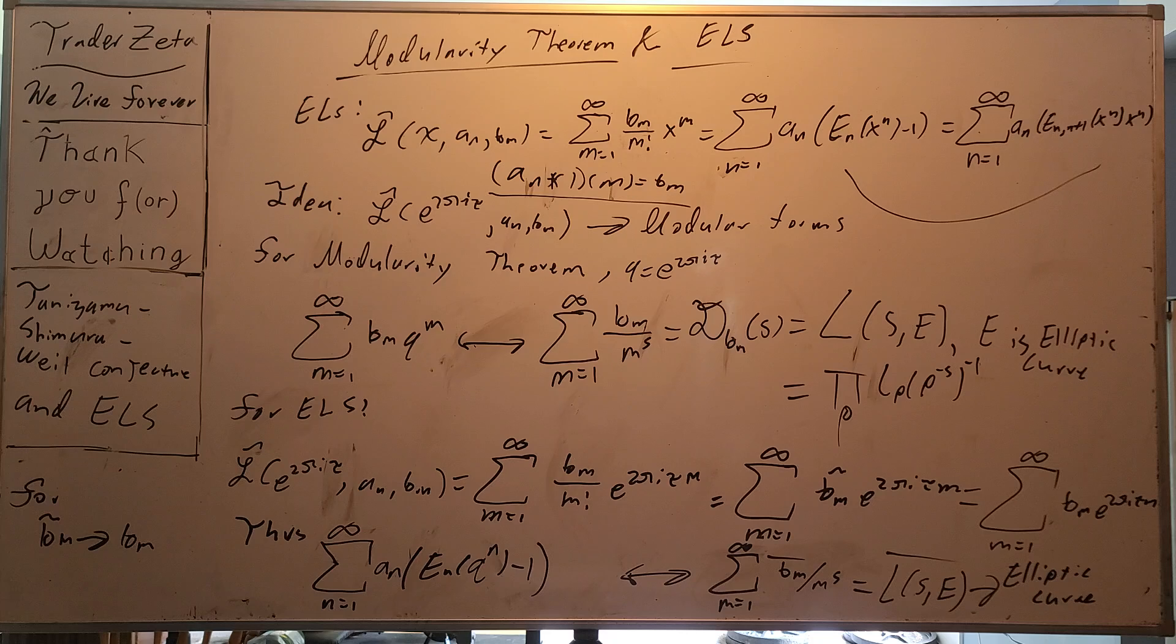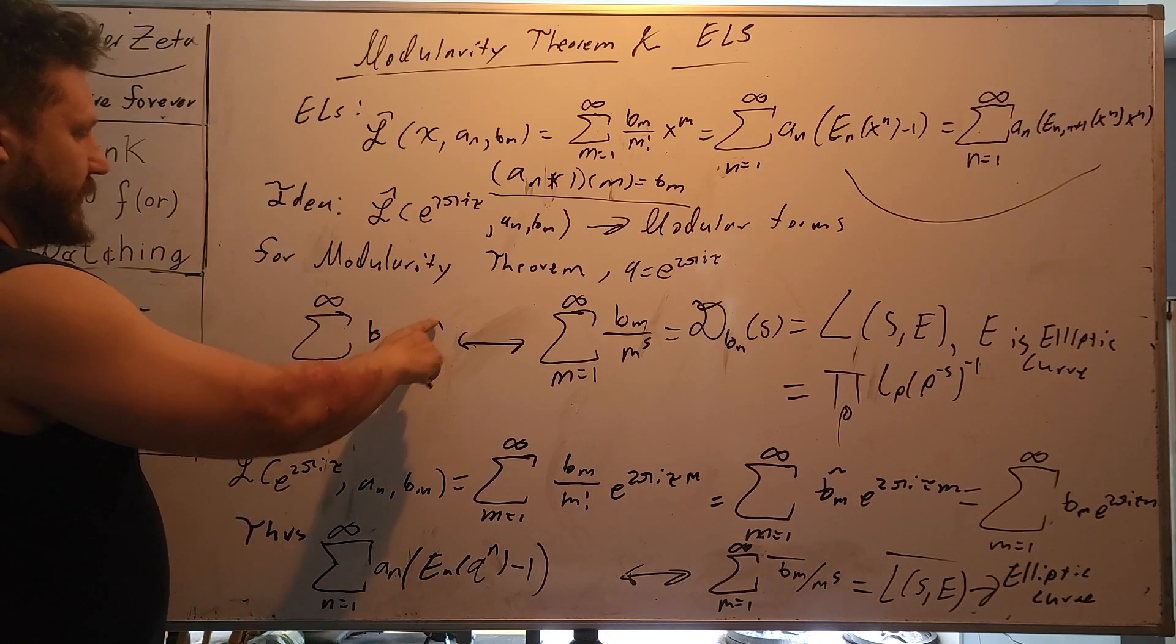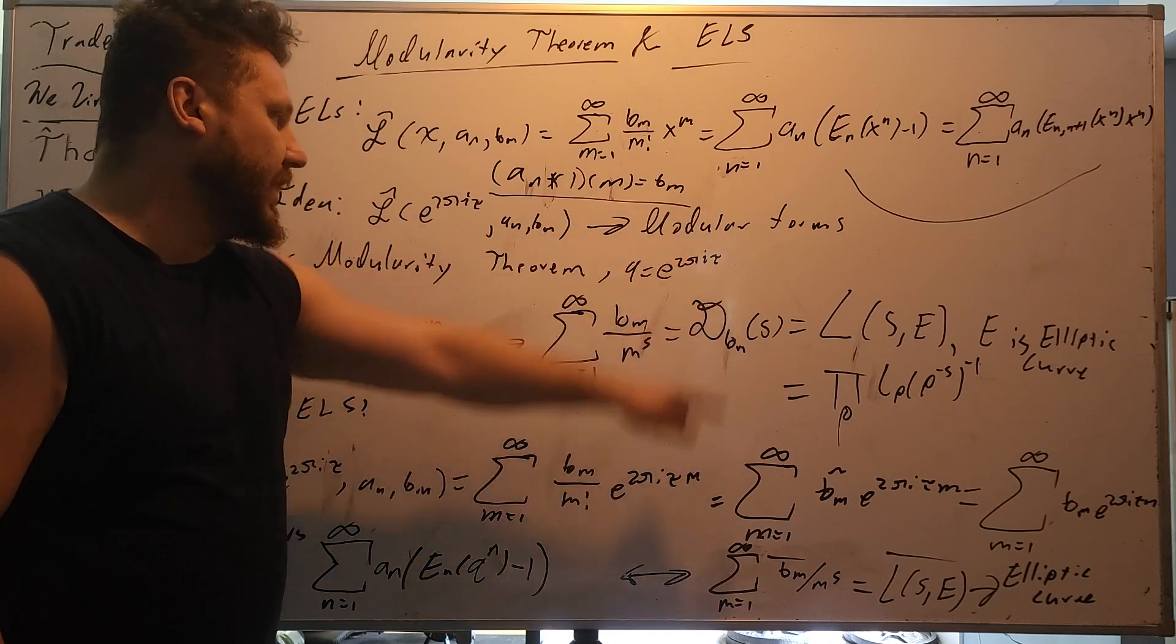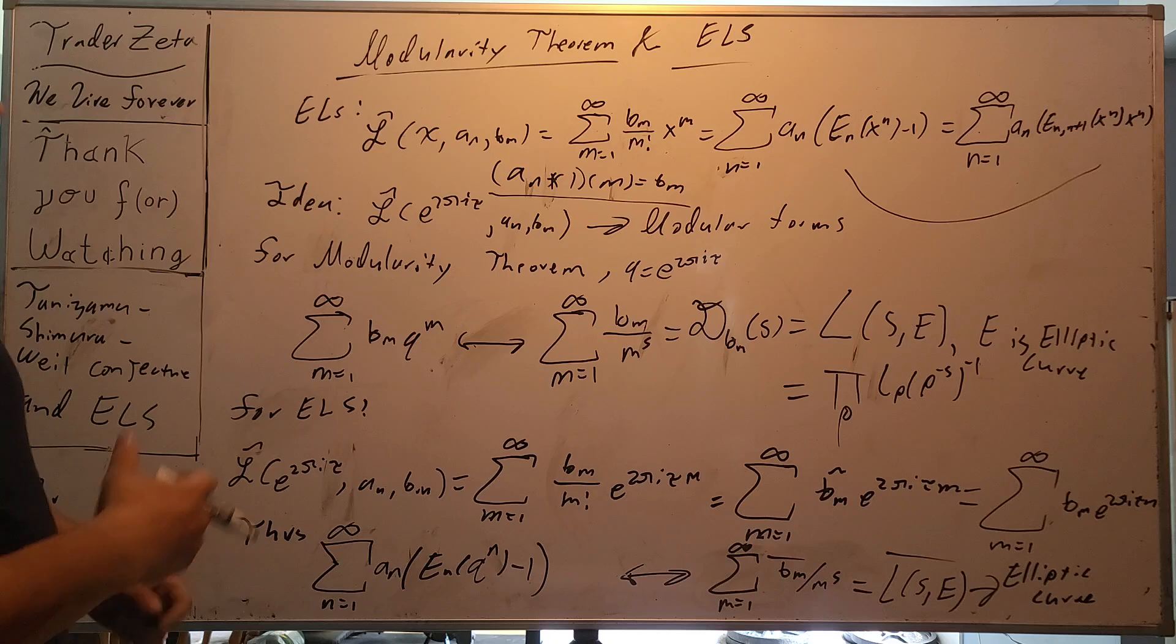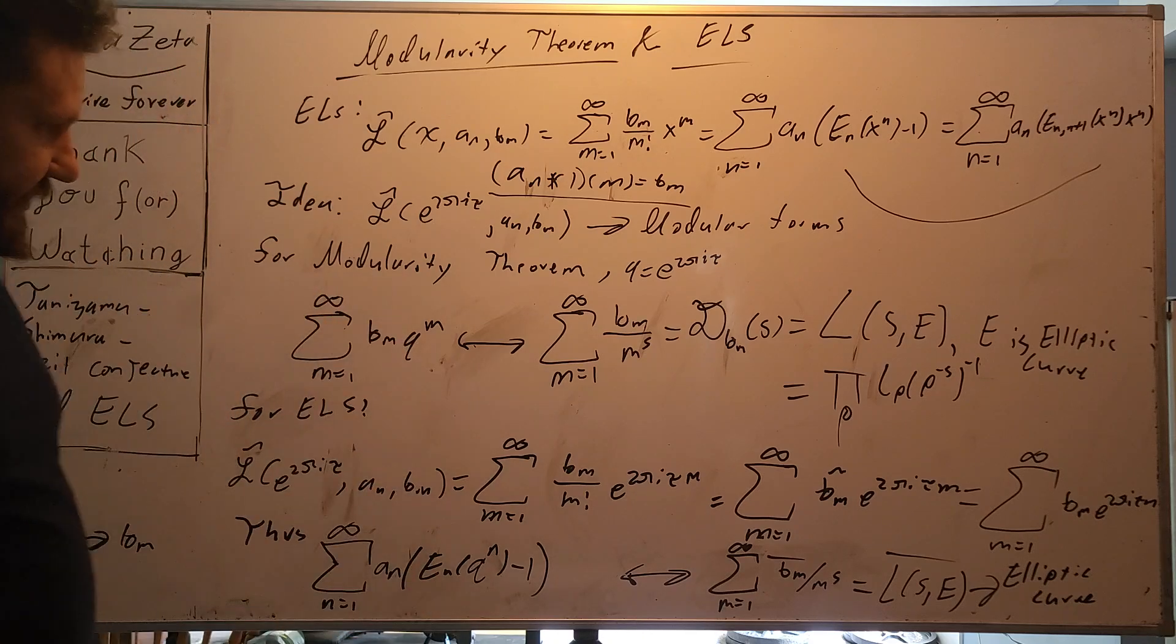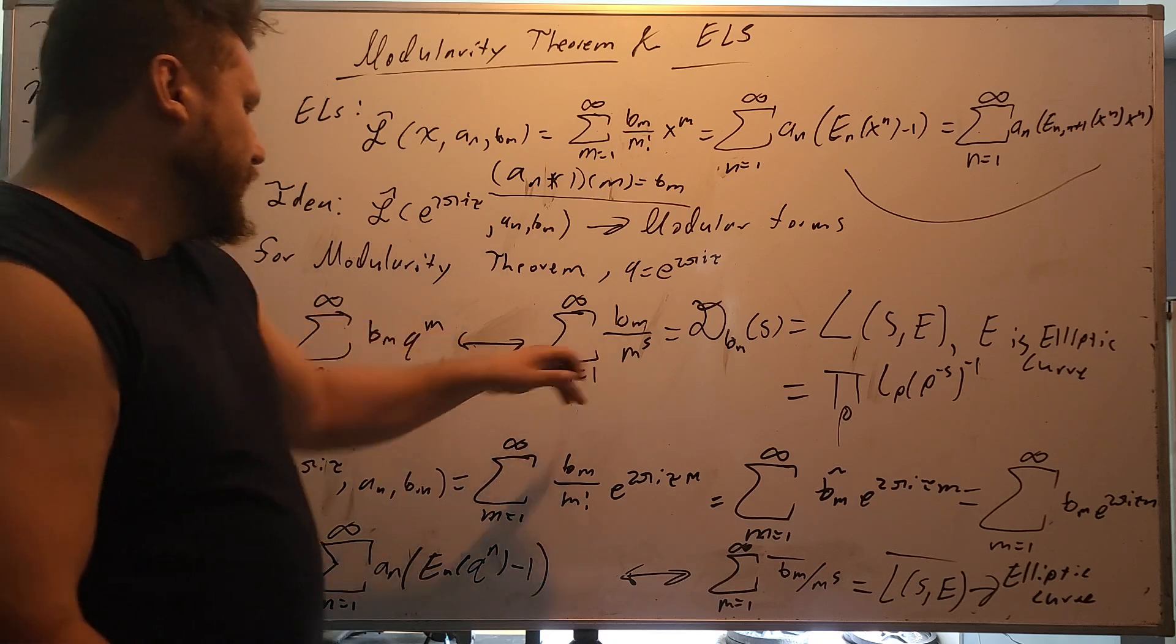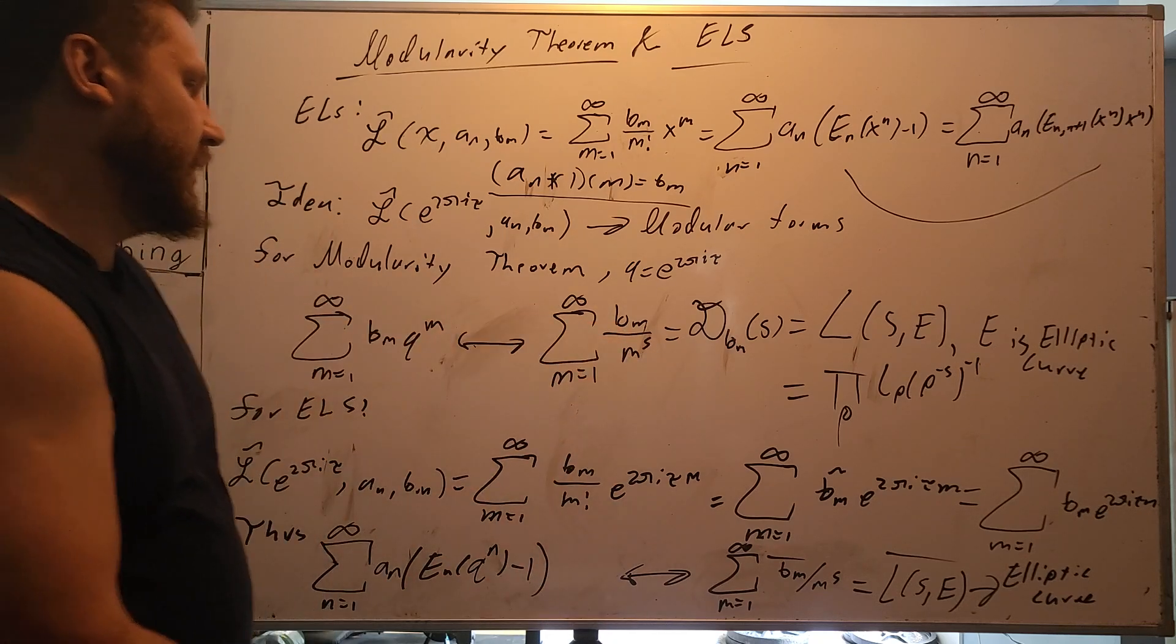it has some associated Dirichlet series, also known as L series. So I've kind of written them out. So you have sum m equals 1 to infinity, b_m divided by m to the s. And this is the Dirichlet series. And this is the L series.